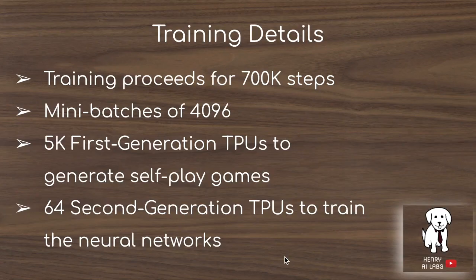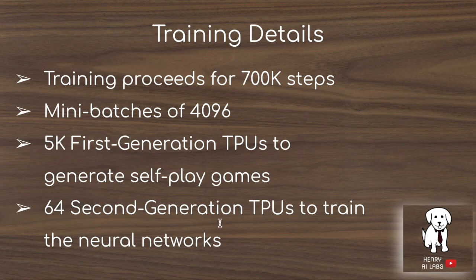The training details of AlphaZero show training proceeds for 700,000 steps with mini-batches of 4,096, updating based on the difference between the target z and value estimate v, and between the MCTS policy pi and the network policy p. They use 5,000 first-generation TPUs to generate self-play games and 64 second-generation TPUs to train the neural networks. So when reports say AlphaZero beat Stockfish in three hours, that's a bit misleading given the massive compute infrastructure involved — you couldn't replicate this on a single GPU or laptop.